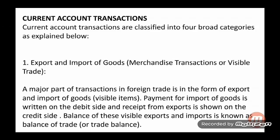Receipts from exports are recorded on the credit side. The balance of these visible exports and imports is known as the balance of trade. In the balance of trade, only visible items — that is, goods — are included.